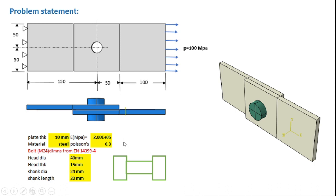Here we will consider only an elastic analysis. As shown here, one end of the plate is pinned with all the translations fixed, and the other end of the plate is subjected to a pressure loading of 100 MPa. The dimensions of the bolt are taken from the Eurocode.